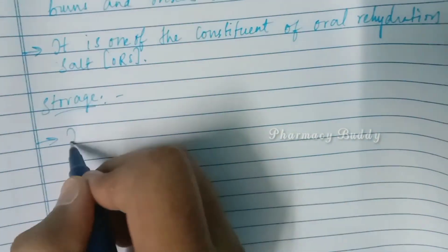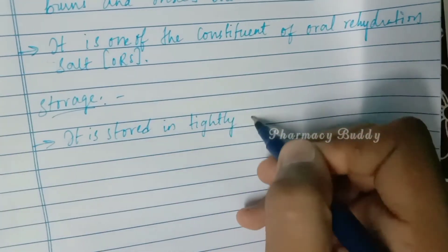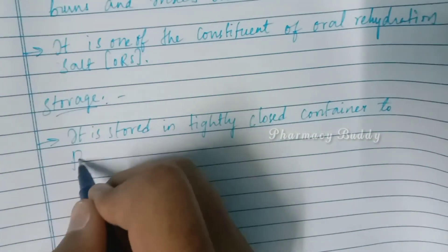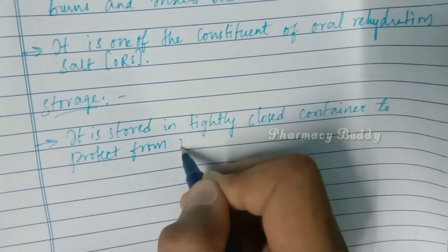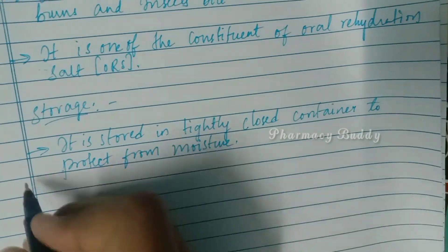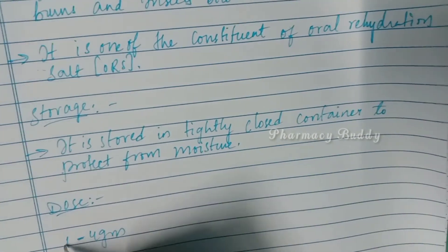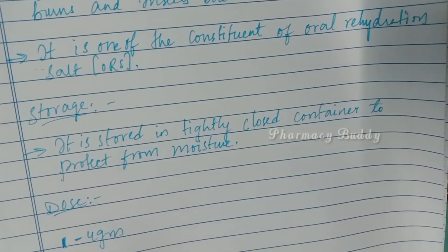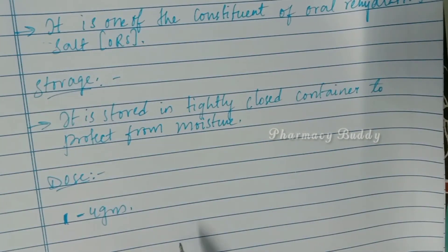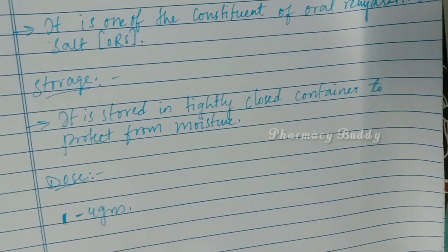Regarding storage, sodium bicarbonate is stored in a tightly closed container to protect from moisture. The dose of sodium bicarbonate is one to four grams for adults. That's all about sodium bicarbonate — in the next video we will discuss another compound related to antacids.